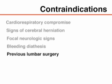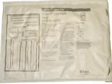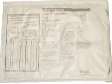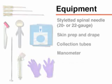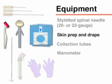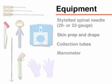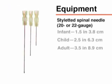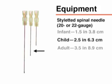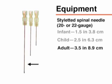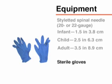Patients who have previously undergone lumbar surgery should be referred to an interventional radiologist. Before performing the lumbar puncture, you will need a commercially available tray containing the necessary supplies: a spinal needle with a stylet, equipment for skin preparation, drapes, collection tubes, and in some cases a manometer. Typically, a 20 to 22 gauge needle is used, with length ranging from 1.5 inches (3.8 cm) for infants, to 2.5 inches (6.3 cm) for children, and 3.5 inches (8.9 cm) for adults. You will also need sterile gloves.